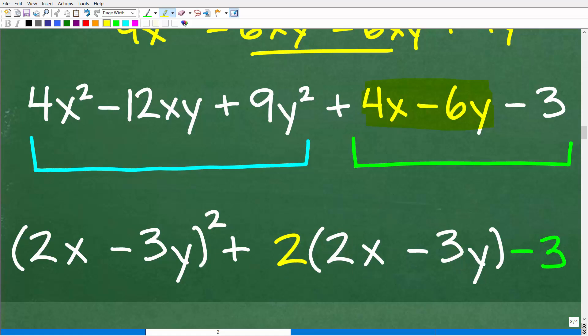That gets us back to 4x minus 6y minus 3. So, let's go ahead and take a look at what we have. I'm going to give you a big clue. And that is, look at this 2x minus 3y squared plus 2 times 2x minus 3y minus 3. Hopefully, you see a pattern here.